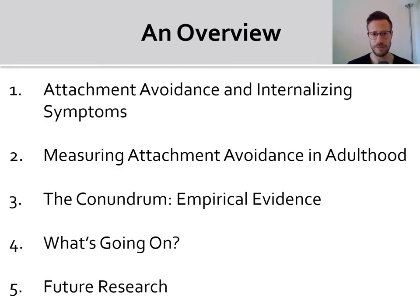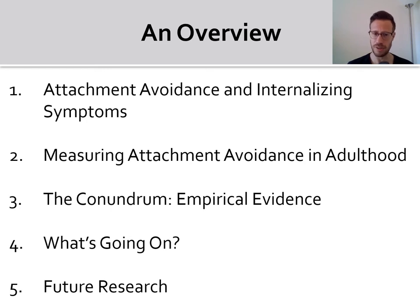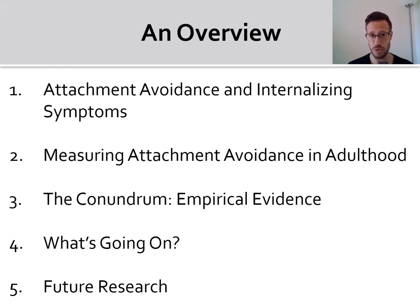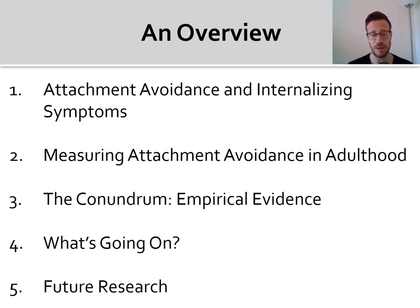In the following presentation I'll start by speaking about the theory behind the link between attachment avoidance and internalizing symptoms in adulthood, and move on to briefly discuss the ways in which attachment avoidance are assessed in adulthood. I will then highlight the empirical evidence to the divergent links between attachment avoidance as assessed in two main research traditions and internalizing symptoms. I'll then move on to try to think about why these divergent links exist and end with some thoughts about future research.